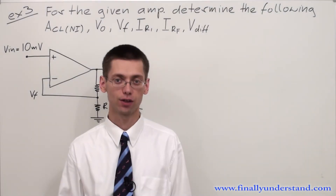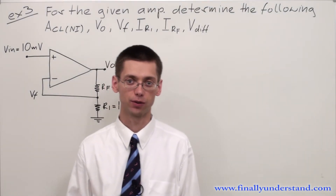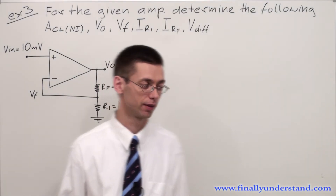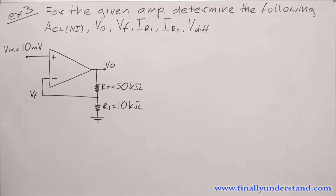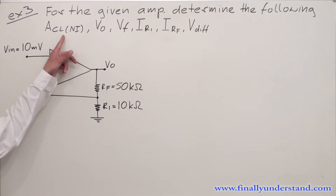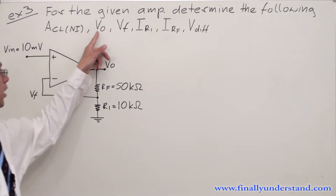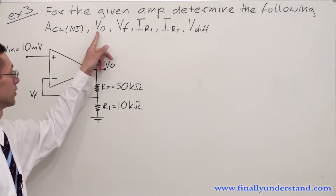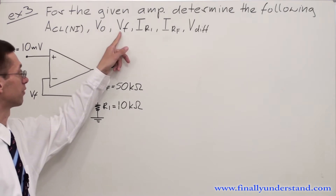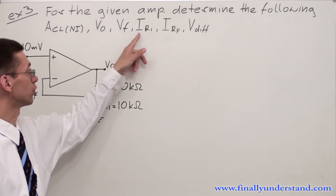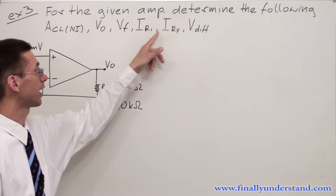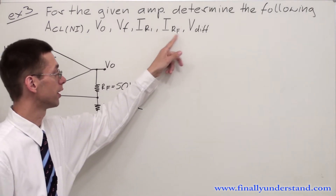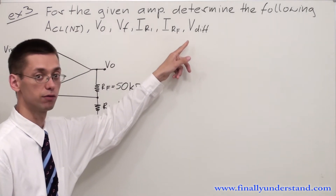Let's solve example number three. For the given amplifier, determine the following: closed-loop gain, output voltage, feedback voltage, current which goes through resistor R1, current which goes through resistor RF, and differential voltage.